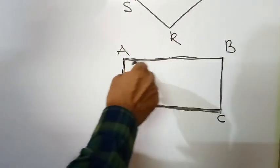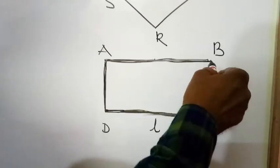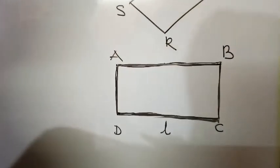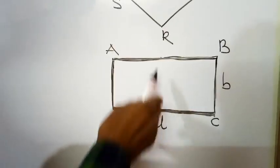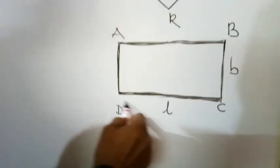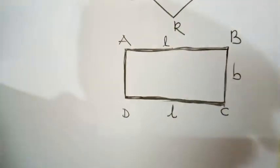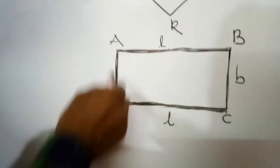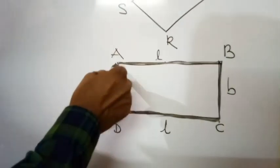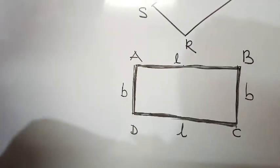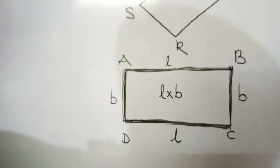How do we call BC and AD? They are called length. Length is denoted by L. How do we denote BC and AD? Breadth — breadth is denoted by B. In a rectangle, opposite sides are equal. Here AB and DC are equal, denoted by L. AD and BC are also equal, denoted by B.